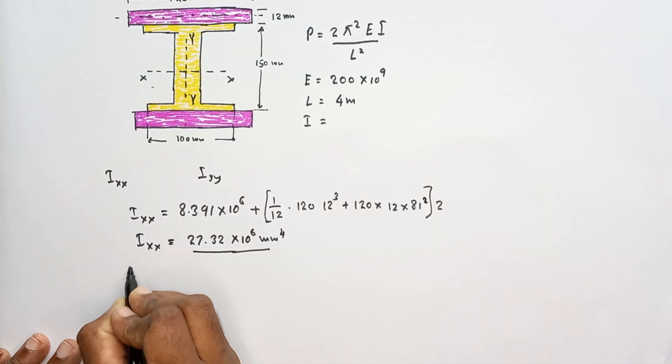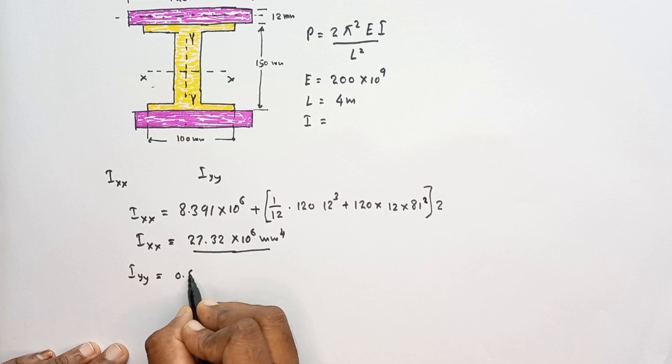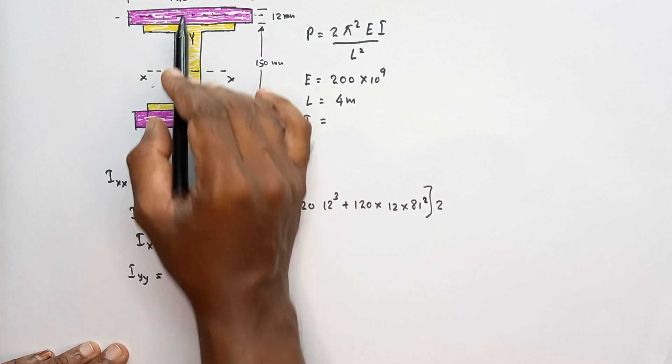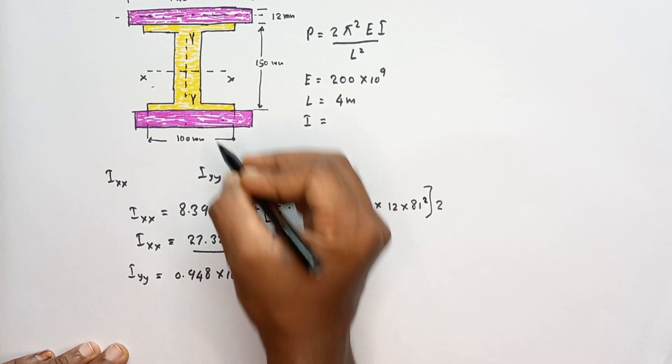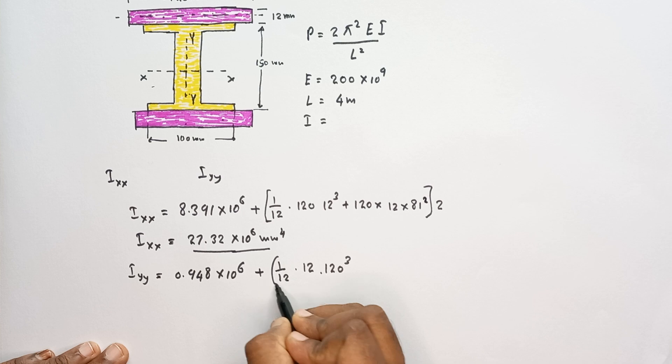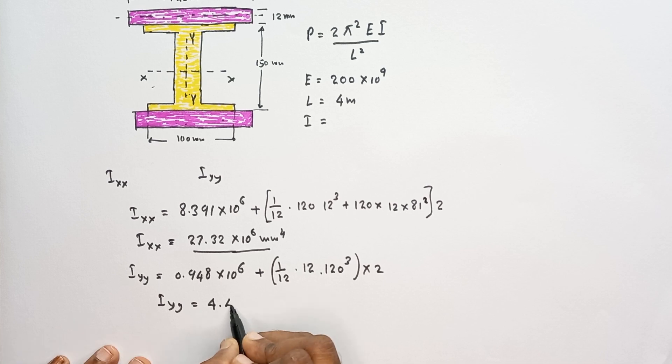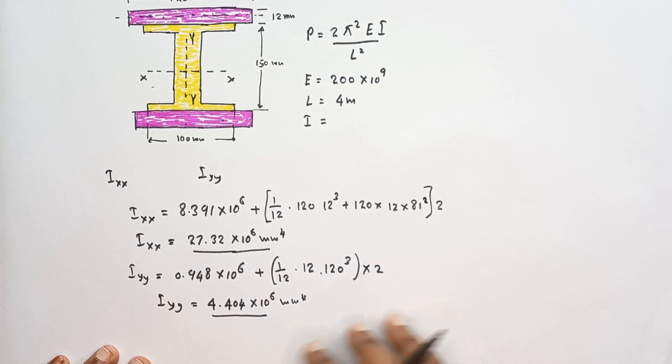Similarly we have to calculate the Iyy. Iyy is equal to 0.948 × 10⁶ plus I'm going to add the I value of these two plates attached to this RSJ beam. If we take one plate, one over twelve—in this situation the thickness is 12, h height, total height is equal to 120—120 cubed. Here are two plates, so multiply by 2. So then we can calculate Iyy value is equal to 4.404 × 10⁶ millimeter to the fourth. This is the Iyy.